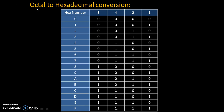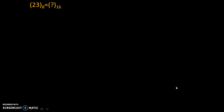Once we know how to convert octal to binary and hexadecimal to binary, we can easily perform octal to hexadecimal conversion. Please note that hexadecimal conversion uses binary groups of maximum 4 digits — so for hexadecimal to binary, we will need 4 digits.